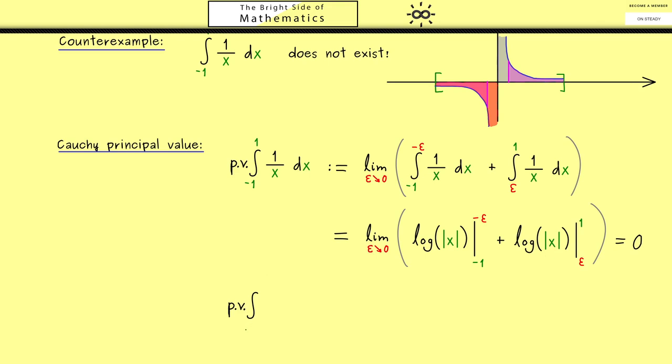Now in addition, we can also define a Cauchy principal value for an integral from minus infinity to plus infinity. And indeed, the simplest example we can choose would be the function f is equal to x.